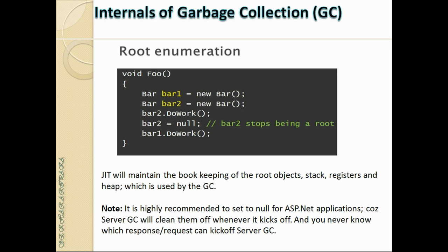Root enumeration is about managing the list of root objects. In this code example, two objects bar1 and bar2 are created, bar1 is used, then bar2 is set to null — indicating bar2 is no longer a root element. The JIT compiler maintains bookkeeping of root objects, stacks, registers, and heaps. In our context, the root object is very important for GC.